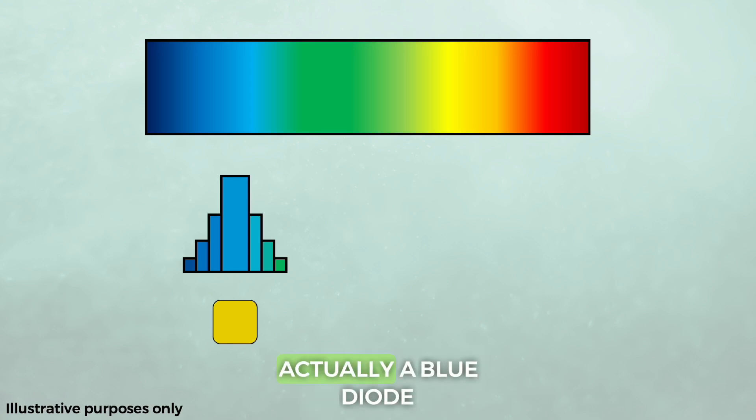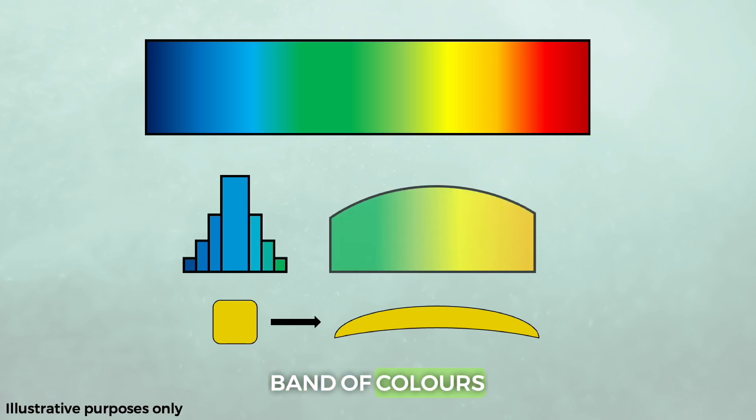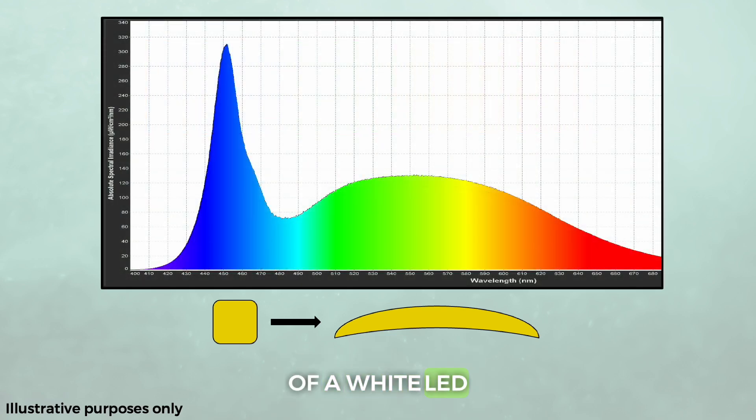High quality white LEDs are actually a blue diode, which as we know is pretty narrowband, and they're coated with a special chemical called a phosphor. The blue diode activates or excites the phosphor, which emits a much more wideband of colors. Add the blue output to the wideband phosphor output and you create a fairly white color for human vision. Here's an actual spectral reading of a white LED.